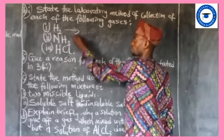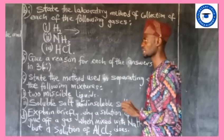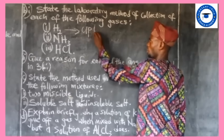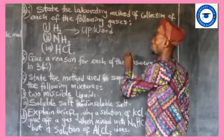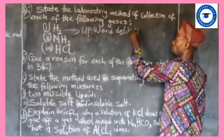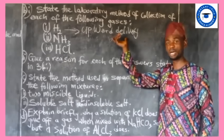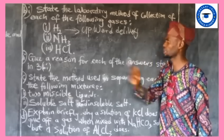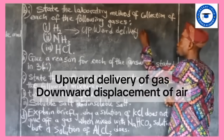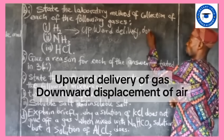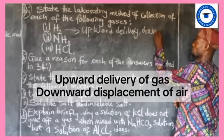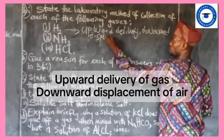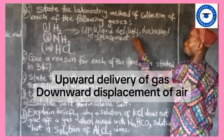For hydrogen gas: in the laboratory, hydrogen gas is collected by upward delivery of gas and downward displacement of air. Any time you have to write a method of collection of a gas, these two statements are very important: upward delivery of gas, downward displacement of air.